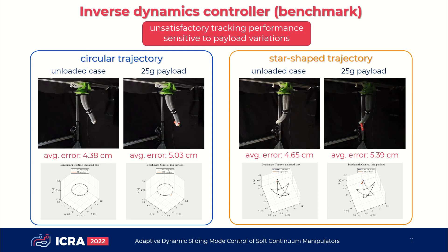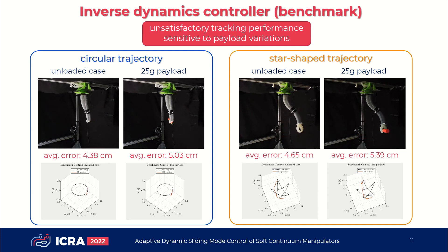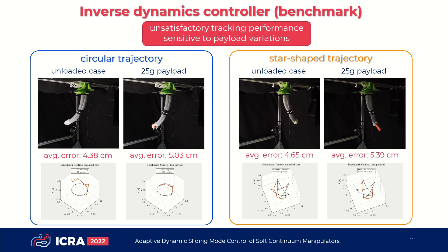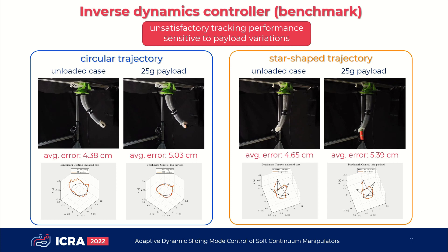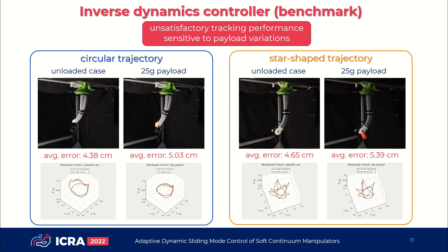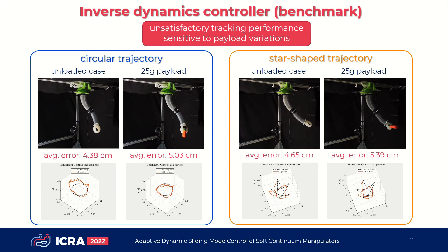Here are the results for an inverse dynamics controller, which we used as a benchmark. For our experiments, we considered different task space trajectories. The benchmark controller, as you can see, has poor tracking performance and it oscillates a lot when dealing with payload masses.